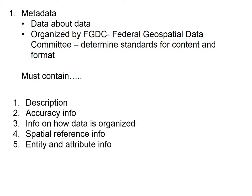Metadata must also contain entity and attribute information — a description of what the dataset is and what it contains. It also needs distribution information: who you can legally share the data with, whether there are restrictions on use, whether you simply need to cite the owner, whether you can only visualize but not modify it, or whether you cannot share it at all. These are the kinds of things made abundantly clear in the distribution information section.